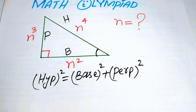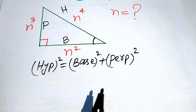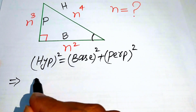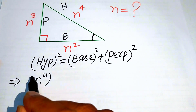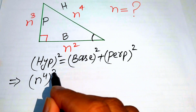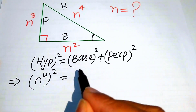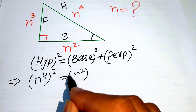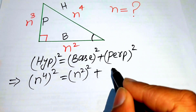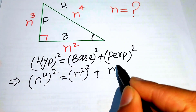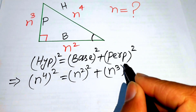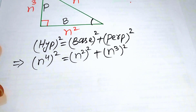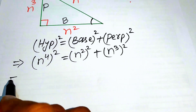The Pythagorean theorem states: hypotenuse squared equals base squared plus perpendicular squared. Now we substitute the three values into this formula. Our hypotenuse is n to the power of 4, the base is n squared, and the perpendicular is n cubed.